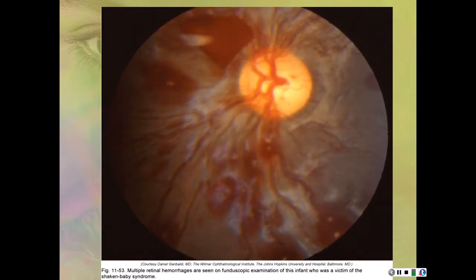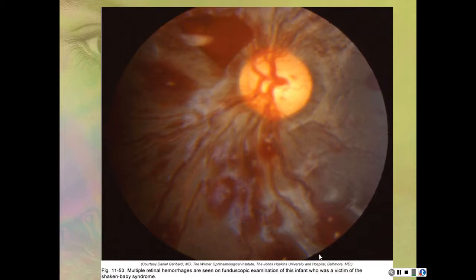Here are the retinal hemorrhages of shaken baby—in a black baby, you can see the entire retina was torn off from violent shaking. Babies this severely shaken usually don't survive. And here it is in a white baby post-mortem, which gives the image a grayish appearance.